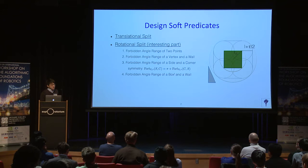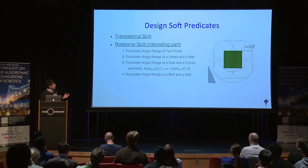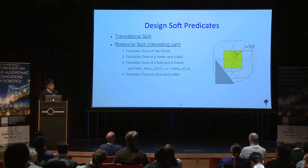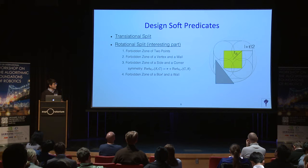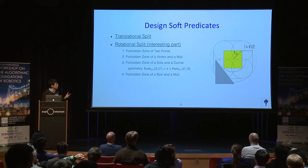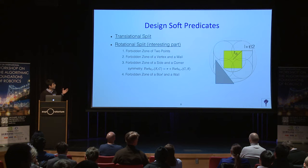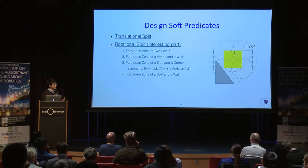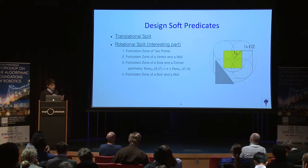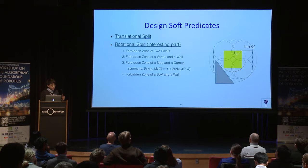Now I want to talk about how to design the soft predicates. If obstacles are far from the translational box, the box will be free. When the obstacle is not too far, the translational box is not free since some orientation is forbidden. We need to figure out the forbidden orientation, which we call the forbidden zone. There are four situations: the forbidden zone of two points, the forbidden zone of a vertex and a wall, the forbidden zone of a side of the box and a corner, and the forbidden zone of a translational box and a wall.